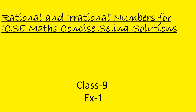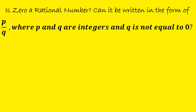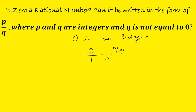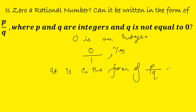The first question from the Selena book is: Is 0 a rational number? Since 0 is an integer, we can write 0 as 0 by 1. We cannot write 1 by 0 because having 0 in the denominator makes the number undefined. Since 0 equals 0 by 1, it is in the form of p by q where p is 0 and q is 1, so yes, 0 is a rational number.